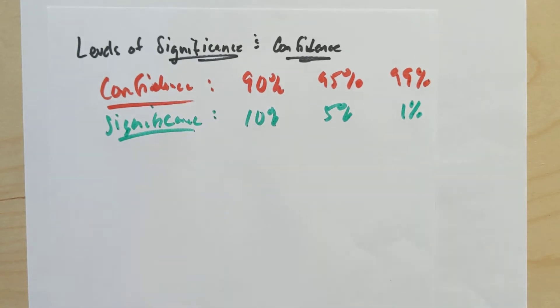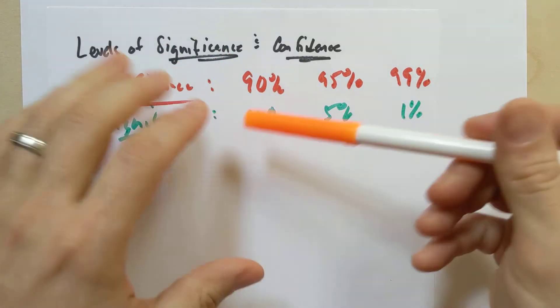And so just take a second, look at those numbers and reflect on what you see and what relationship there might be between a level of confidence and significance.